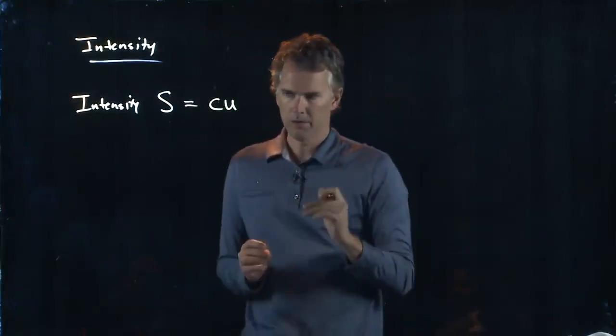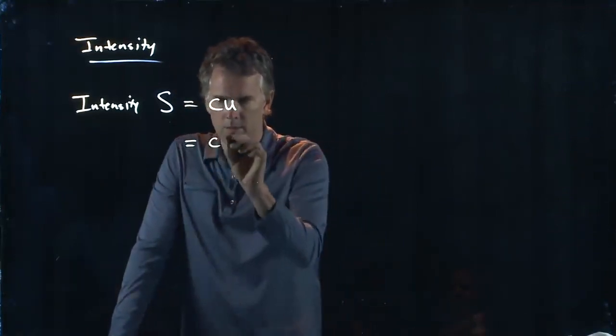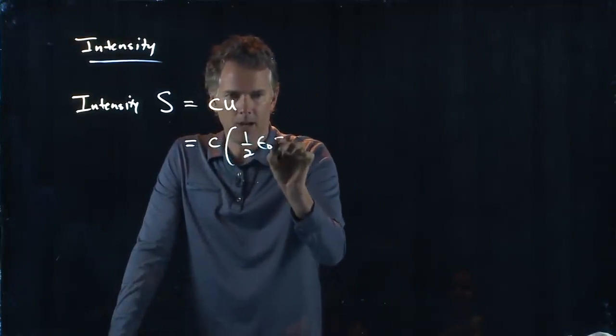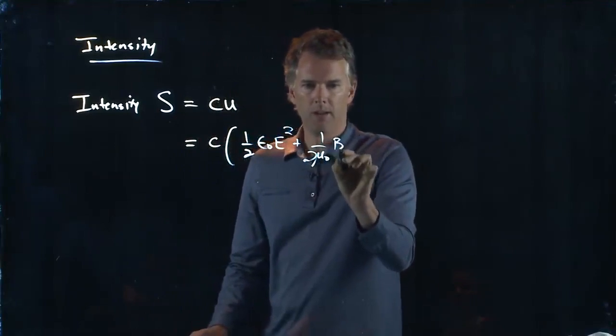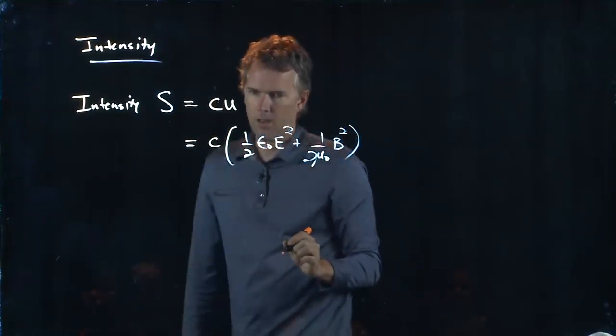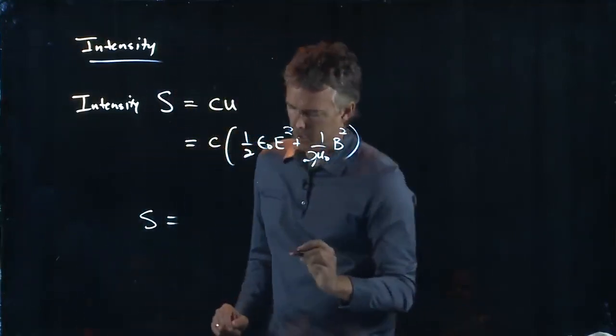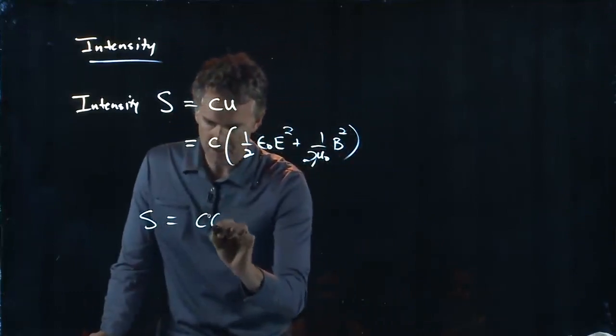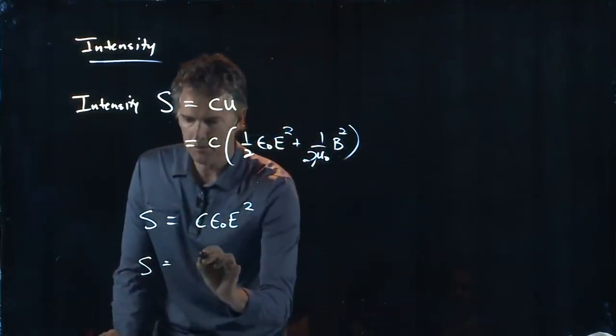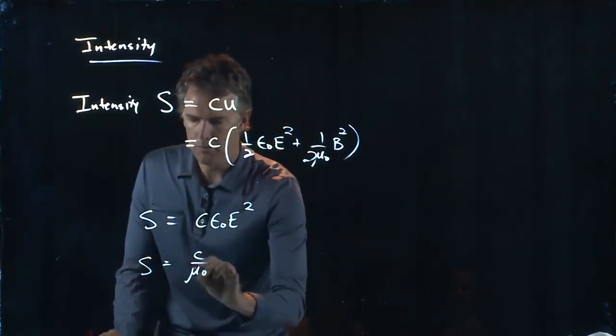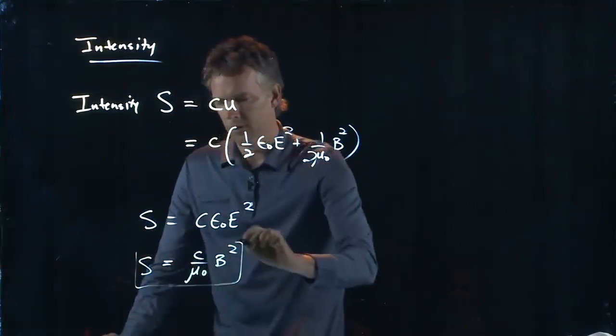But we know exactly what U is. U is 1/2 epsilon naught E squared plus 1 over 2 mu naught B squared. But those are equal, and so we can just double one of them. We can say S is equal to C epsilon naught E squared, or S is equal to C over mu naught B squared. Those are equivalent statements.